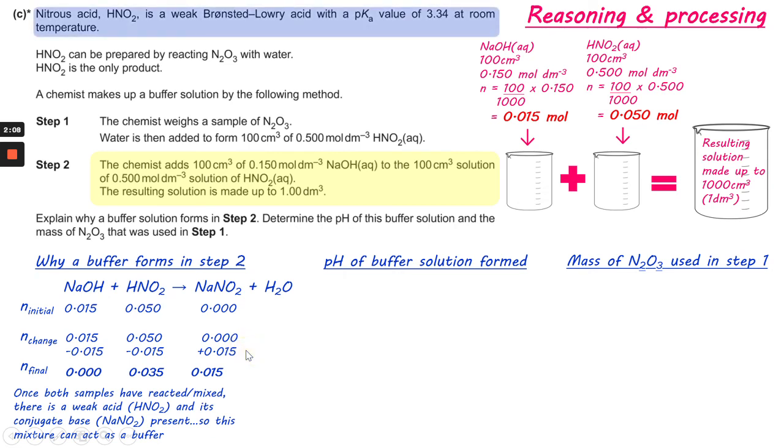The next stage is to have a look at the pH of the buffer solution formed. Now it gives you the pKa value of 3.34. And obviously remembering the general buffer calculation, the expression, we put in the concentration terms for the acid and the conjugate base. But remember, the resulting solution is made up to 1000 cm³. So we don't need to convert these values into concentrations, which saves us a bit of work.